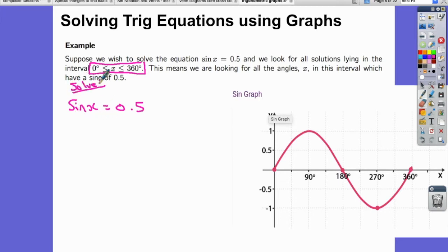So solving usually means find x, doesn't it? So we're going to be finding all of the answers to this in this particular domain, because obviously the sine graph goes on forever in both directions. So we need to narrow it down to this small window, just this first oscillation.